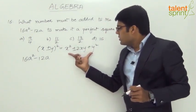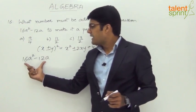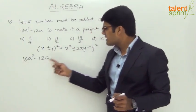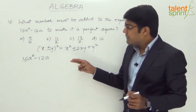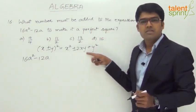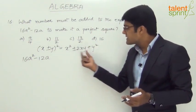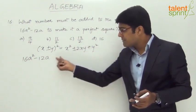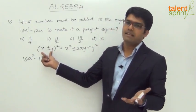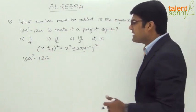Looking at x² ± 2xy + y² and comparing with 16a² - 12a, we can see some resemblance. We need to express 16a² - 12a in the form of x² ± 2xy + y² by adding some number. Once we do that, we can write it as (x + y)² or (x - y)², making it a perfect square.